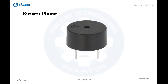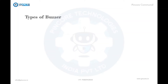Let's discuss the pin configuration of the buzzer. As discussed previously, the buzzer has only two terminals: a positive terminal and a negative terminal. The positive terminal is actually the longer terminal and is powered to the input voltage. The negative terminal is the shorter terminal and is typically connected to the ground of the system.